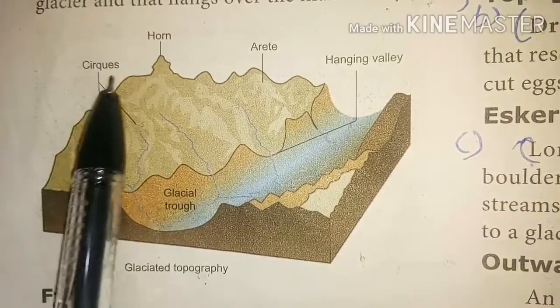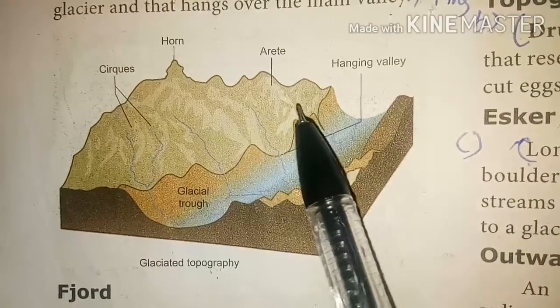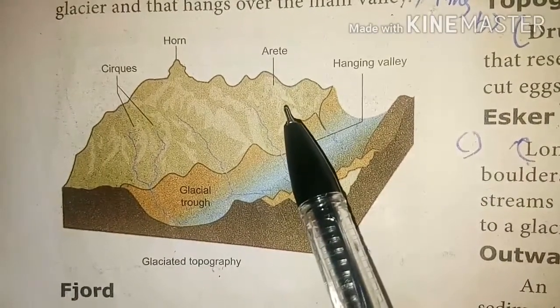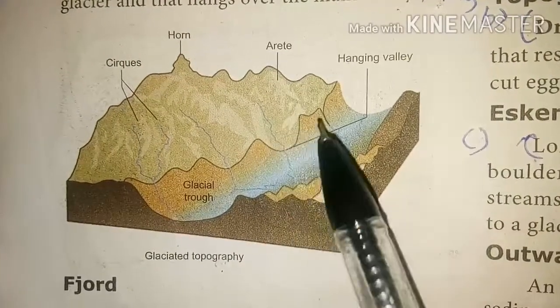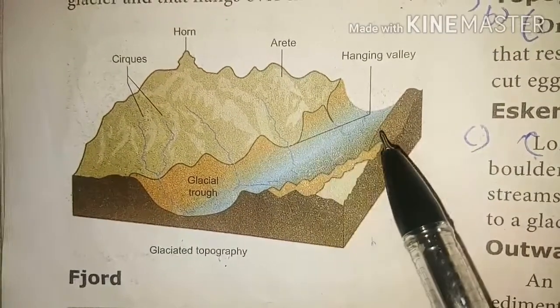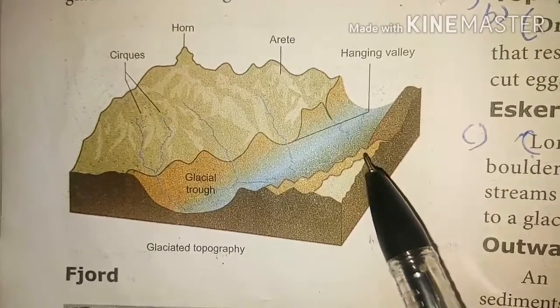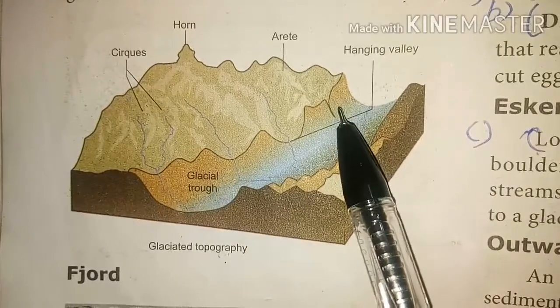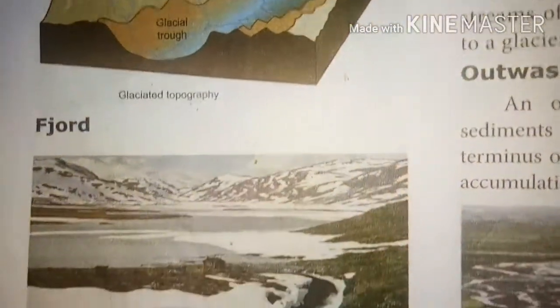The peak is called the horn. Arêtes are narrow ridges formed when two cirque walls join together back to back and form narrow knife-like sharp ridges. Hanging valleys are valleys eroded by tributary glaciers that hang over the main valley. Fjords are glacial valleys that are partly submerged in the sea.